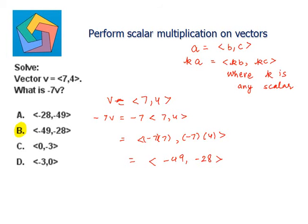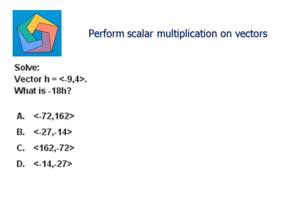Next problem: solve vector h equals negative 9 comma 4. What is negative 18h? So h is negative 9 comma 4.